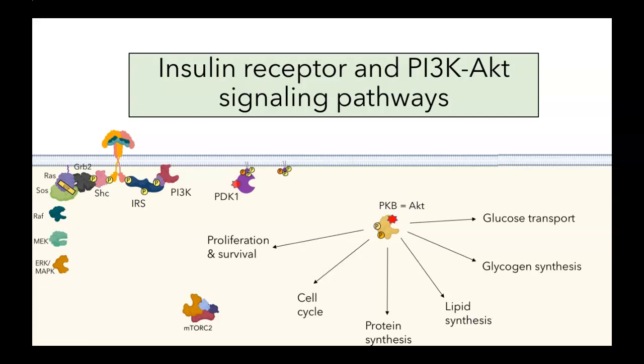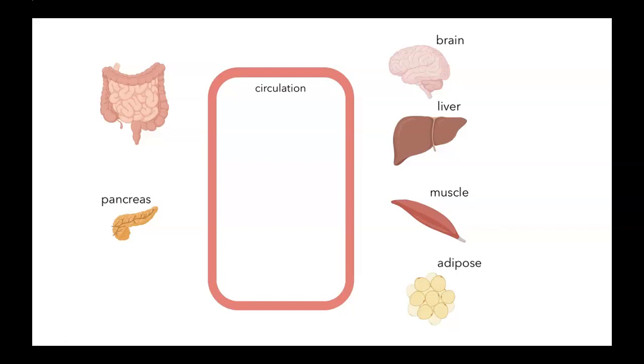In this video, I want to talk about the insulin receptor and PI3K AKT signaling pathways. I'm going to begin by talking a little bit about insulin. You've probably heard of insulin. It's the major hormone involved in regulating blood sugar levels. Really, it's the major hormone involved in regulating energy balance in the whole body.